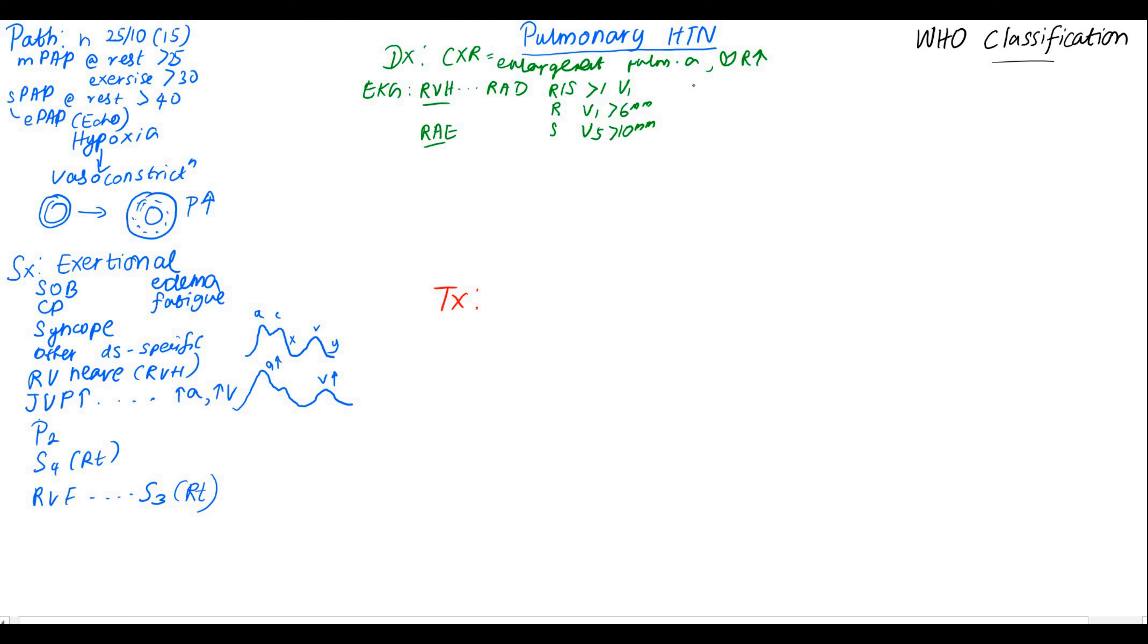There can also be right ventricular strain pattern. Right ventricular strain pattern means ST depression and T wave inversion which can be seen on V1 and V2. Right atrial enlargement is present with P pulmonale. In P pulmonale, the P wave is going to be more than 2.5 mm in 2, 3, or AVF.